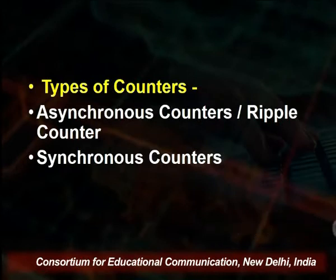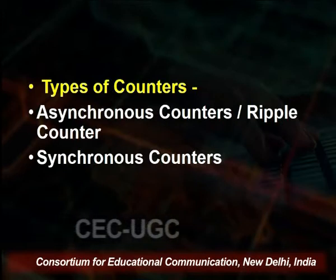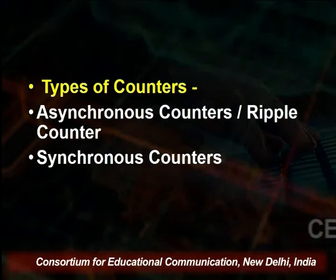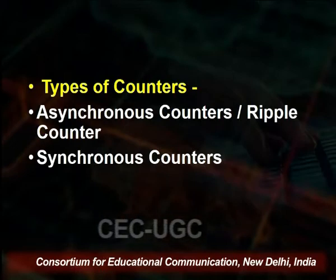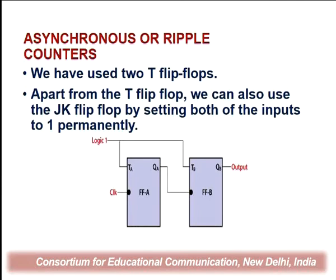Two types of counters can be discussed: asynchronous counters (also called ripple counters) and synchronous counters. In an asynchronous or ripple counter, two T flip-flops are used — we can also use JK flip-flops with both inputs set to 1 permanently. Flip-flop A receives logic 1 at TA, and its output goes as the clock input to flip-flop B. The external clock passes to the clock input of FFA, and FFA's output Q is passed to the clock input of FFB.